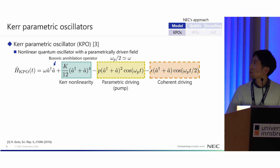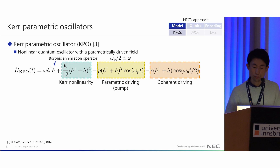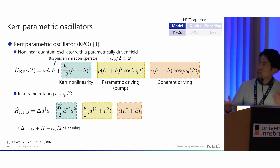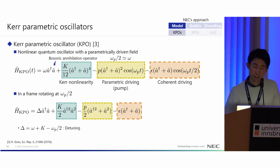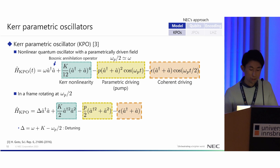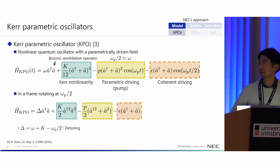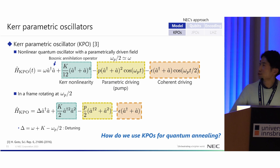These three terms are enough to describe the KPO. We add an additional bias term called coherent driving to discuss quantum annealing. We move to the frame rotating at this frequency to simplify the model. The Hamiltonian becomes a simplified form where delta is the difference between omega and omega_p over 2 plus K, with additional stationary terms. This is the model we focus on, and we want to know how to use KPO systems for quantum annealing.